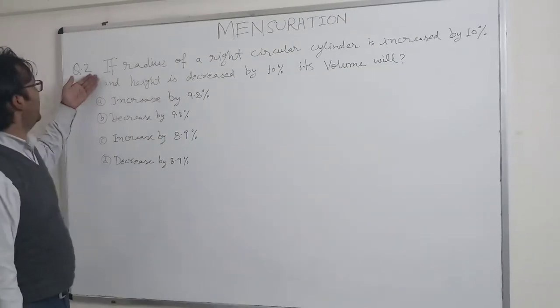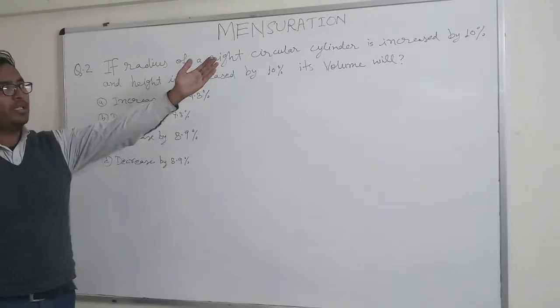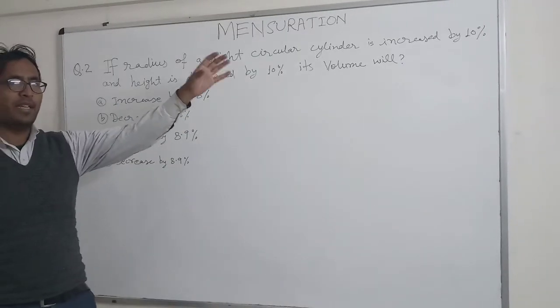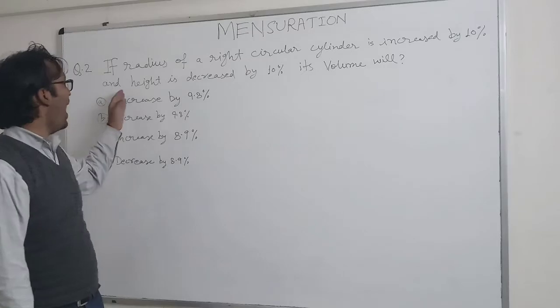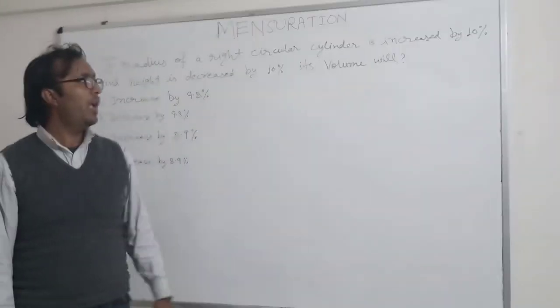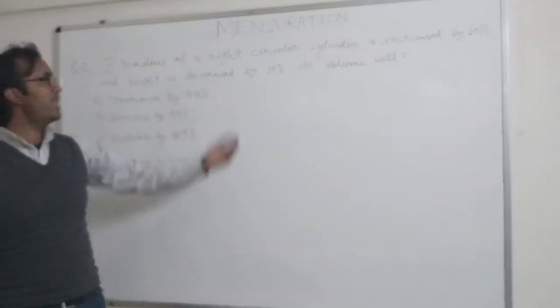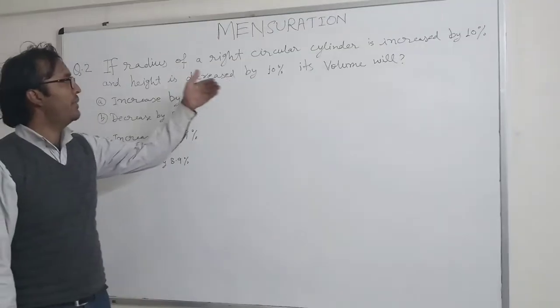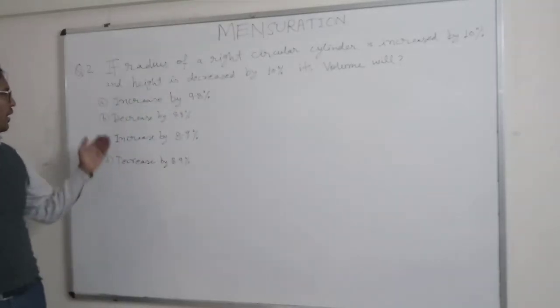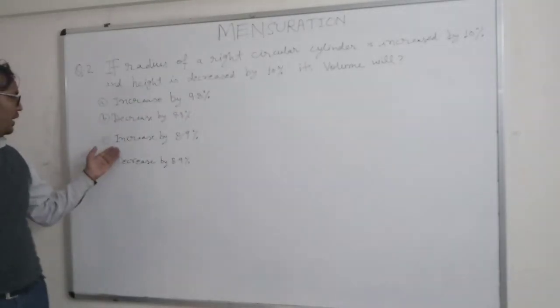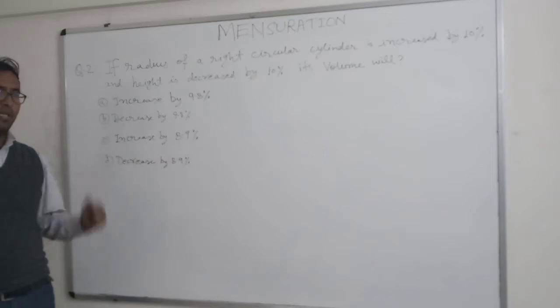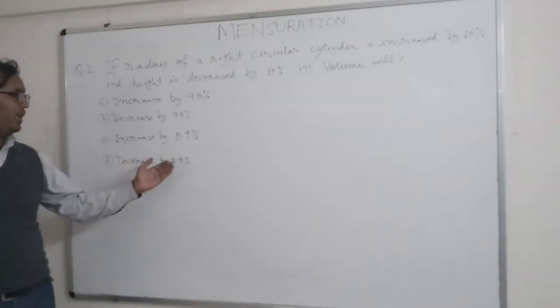This is question number 2 of my series. If the radius of a right circular cylinder is increased by 10% and height is decreased by 10%, its volume will — option A: increase by 9.8%, option B: decrease by 9.8%, option C: increase by 8.9%, or option D: decrease by 8.9%.